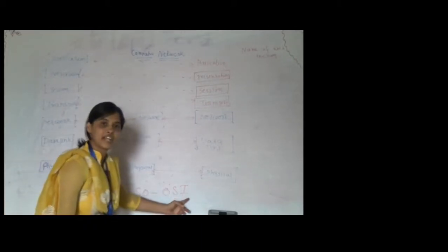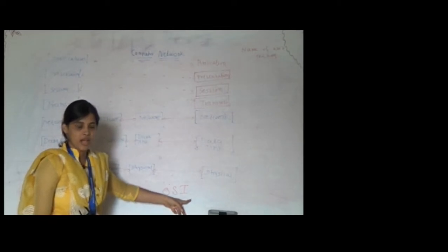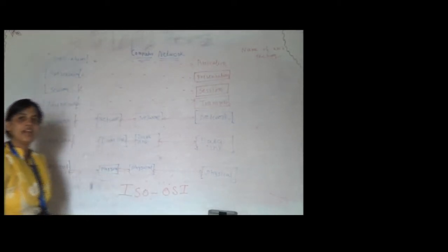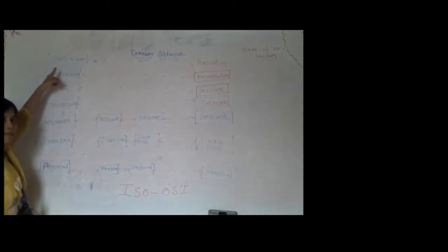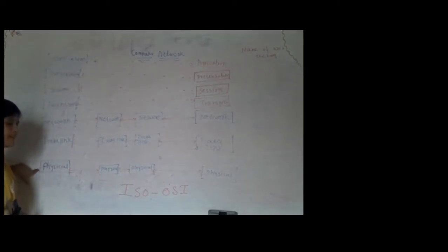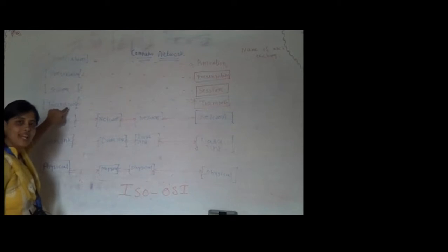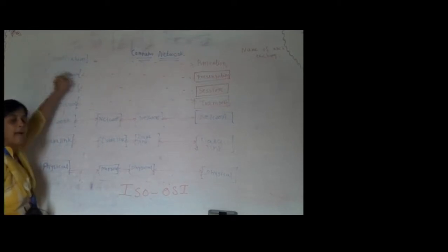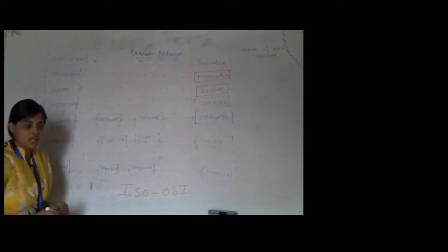In the OSI reference model, there are 7 layers starting from physical to application: Layer 1 physical, Layer 2 data link, Layer 3 network, Layer 4 transport, Layer 5 session, Layer 6 presentation, and Layer 7 application layer. So these are the 7 layers.